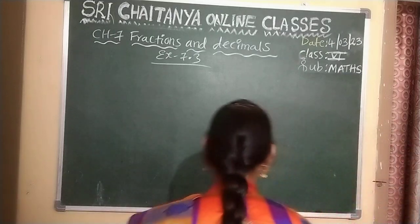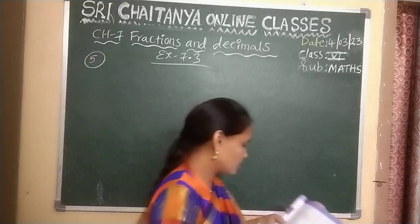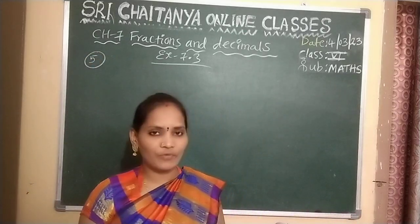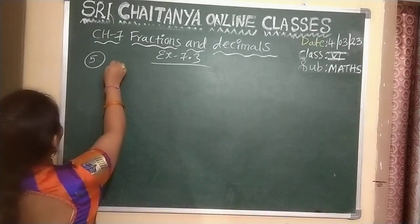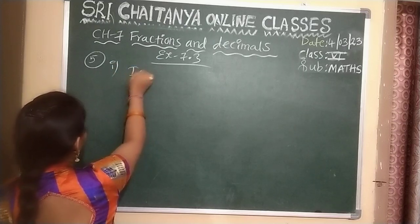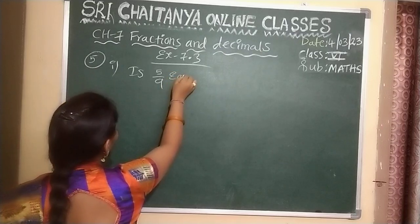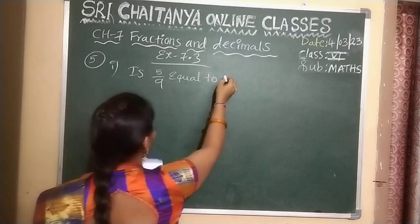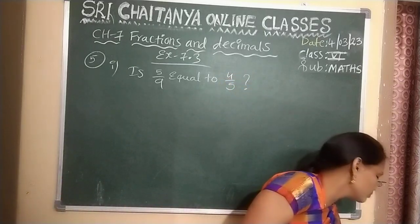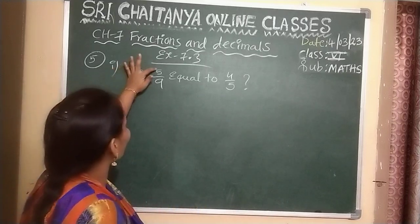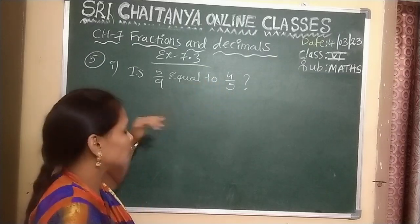The 5th question I am going to explain. What is the 5th question? Here, answer the following. Also, write how you solve them. The first one is: is 5 by 9 equal to 4 by 5? This is the question. Is 5 by 9 equal to 4 by 5? Is it equal or not? They are asking.